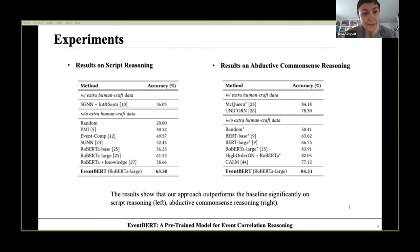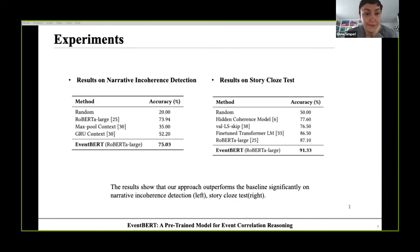There are tables of results on script reasoning and abductive common sense reasoning. It is shown that EventBERT significantly outperforms Roberta-Large on script reasoning and abductive common sense reasoning. There are tables of results on narrative incoherence detection and story-closed test. It is shown that EventBERT significantly outperforms Roberta-Large on narrative incoherence detection and story-closed test. In conclusion, EventBERT achieves state-of-the-art performance on script reasoning, narrative incoherence detection, and story-closed test, and it outperforms all baselines of same model size and without additional data. EventBERT's superiority demonstrates that EventBERT is a general event-based correlation reasoning model and can be applied to a wide range of event-related downstream tasks.